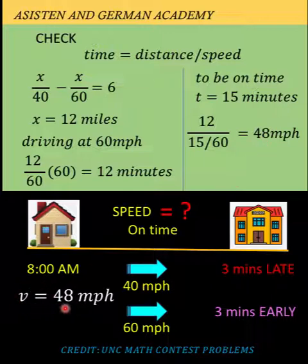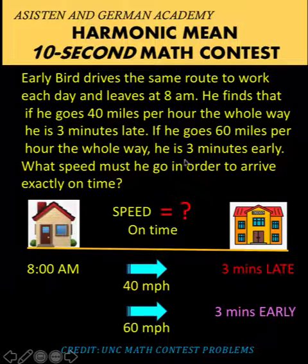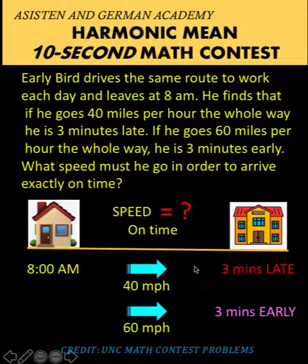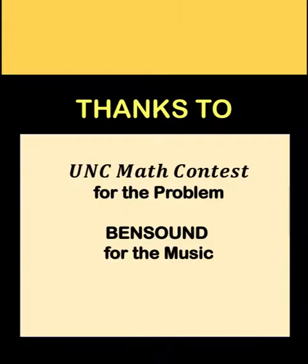So for this problem, Early Bird must travel 48 miles per hour to arrive on time. Thank you very much, and we hope to see you again in our next video.